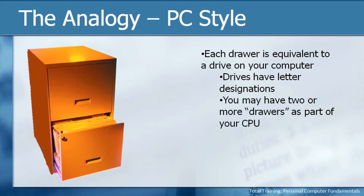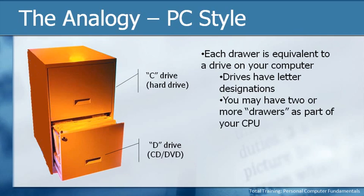On a business computer, you're certainly going to have more, because you'll not only have things on your personal local drive, but also things available on the network. The network is the equivalent of the file room. The typical letter designation is for your hard drive to be the C drive and your CD or DVD to be the D drive. Floppy drives are usually the A drive, just as a matter of reference.